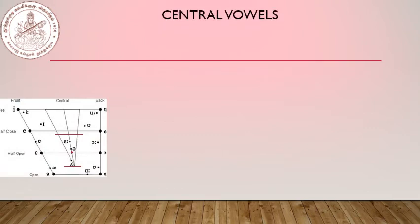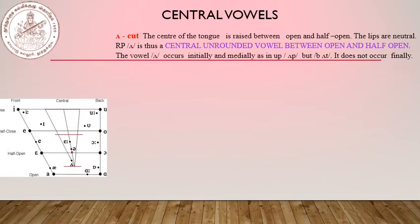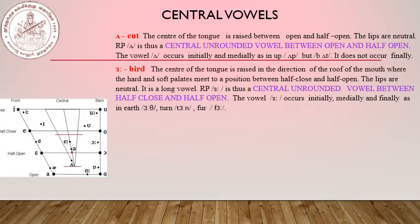Now let us see the central vowels. The central vowels use only the centre part of the diagram, between half close and half open — the fully open position is not used for central vowels. The first sound is /ʌ/. During articulation, the centre of the tongue is raised between open and half open. The lips are neutral. The received pronunciation /ʌ/ is thus a central unrounded vowel between open and half open. The vowel occurs initially and medially, as in 'up' (initial) and 'cut' and 'but' (medial) — it does not occur finally.